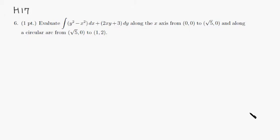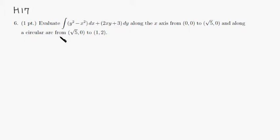Let's look at Hallmark 17, problem number 6. We want to evaluate this line integral along the x-axis from (0,0) to (√5, 0) and along a circular arc from (√5, 0) to (1, 2).